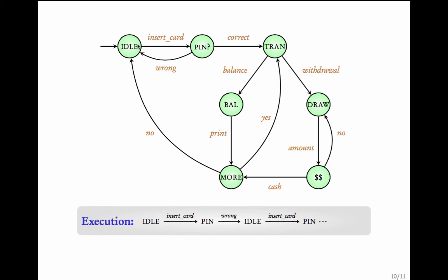But this is representing the fact that the controller is idle, goes to pin, idle, pin and so on. Yet another execution could be idle, pin, transaction, balance, more, idle, pin, transaction, balance, more, transaction, withdrawal, dollar, more, idle, pin, idle and so on. So, these are the behaviours of the code. These are the ways in which the code undergoes its transformations.